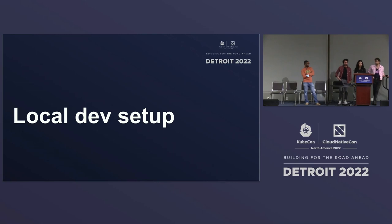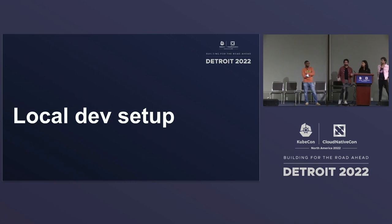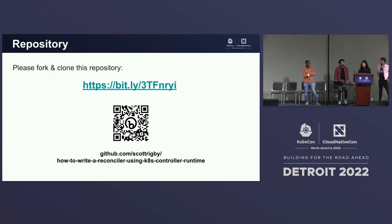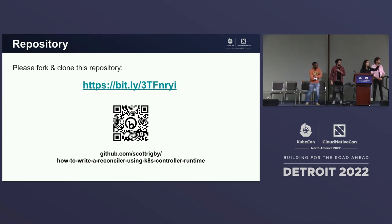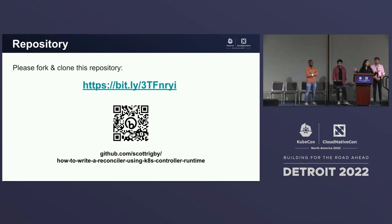In order to run the controllers on your local machine, we've prepared multiple methods. The repository can be found at this Bitly link — you can also scan the QR code and send it to yourself. The name of the repo is the title of the session: 'How to Write a Reconciler Using Kubernetes Controller Runtime.' We'll leave a few seconds for people to grab it.